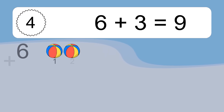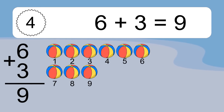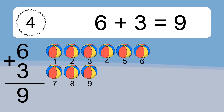6 plus 3 equals what? 6 plus 3 equals 9. Let's count it: 1, 2, 3, 4, 5, 6, 7, 8, 9.